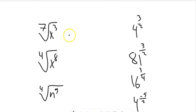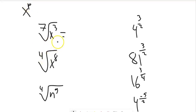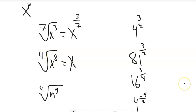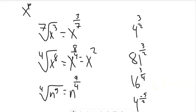Let's rewrite some expressions with rational exponents. The seventh root of x cubed: power is 3, root is 7, so this is x to the 3/7. The fourth root of x to the 8th: that's x to the 8/4, which simplifies to x squared. The fourth root of n to the 9th would be n to the 9/4.